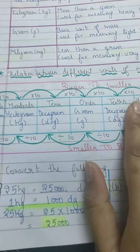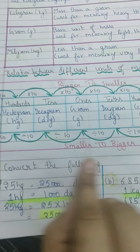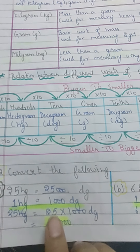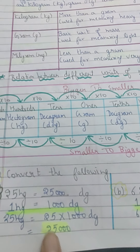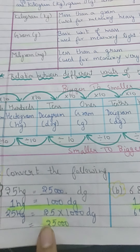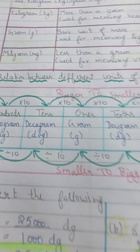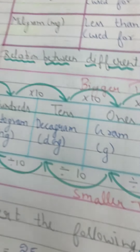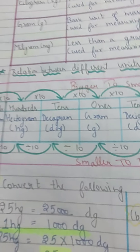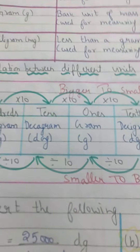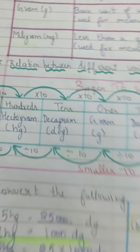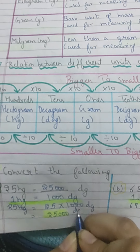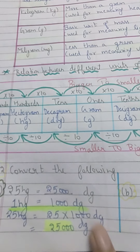Since we are going from bigger to smaller, we multiply. So 25 hectogram equals 25 × 1,000 = 25,000 decigram. That is the answer: 25,000 decigram. Remember, it is compulsory to write the unit — half marks will be deducted if you do not write the units.